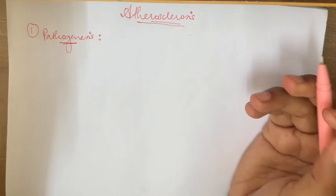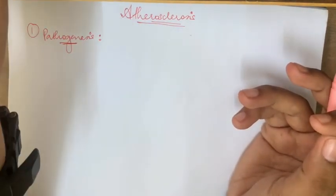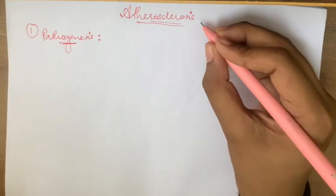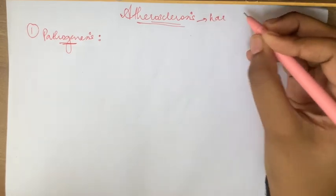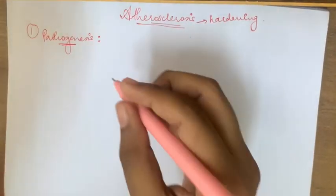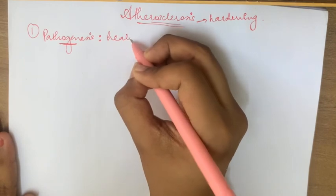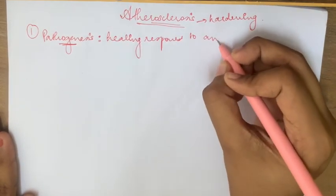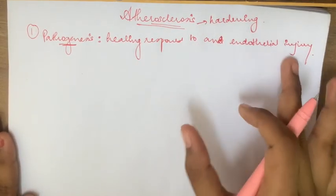So atherosclerosis, according to the name, of course it's some Greek or Latin, you can figure out that it means hardening of the vessels. People usually describe atherosclerosis as the healing response to an endothelial injury. So let me elaborate this sentence to you.